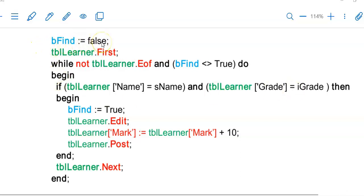So we'll start with our bFind as false. We have our dot first and while not end of the table and then our next just before the end of the while. And in here we have our if statement to test if the person's name is for example John in grade 10 and if that is true then we set bFind to true which will make your loop stop due to the second condition in your while loop. And then we have on the inside of the if statement the edit and dot post with a change that we had to make to that learner's record.